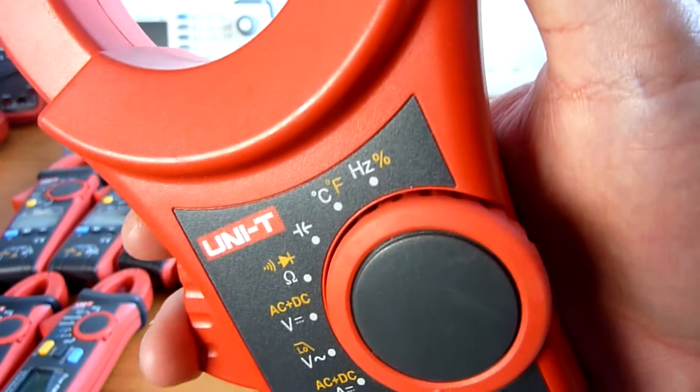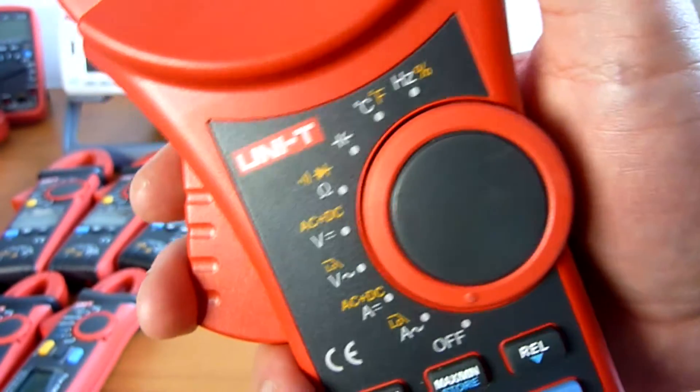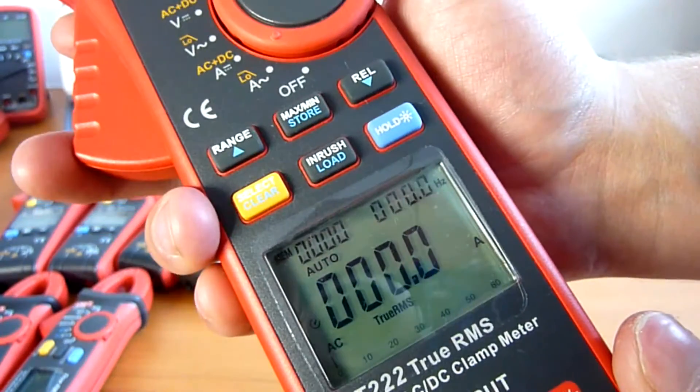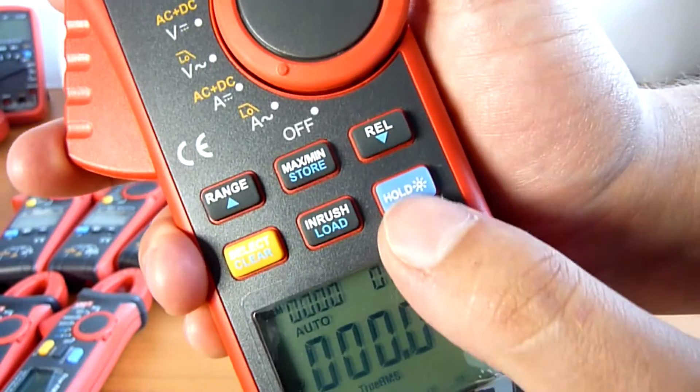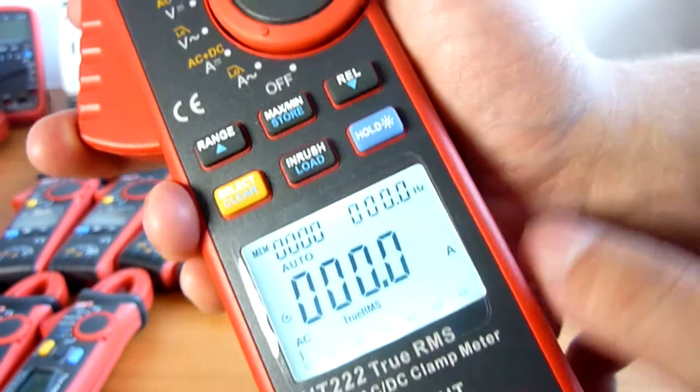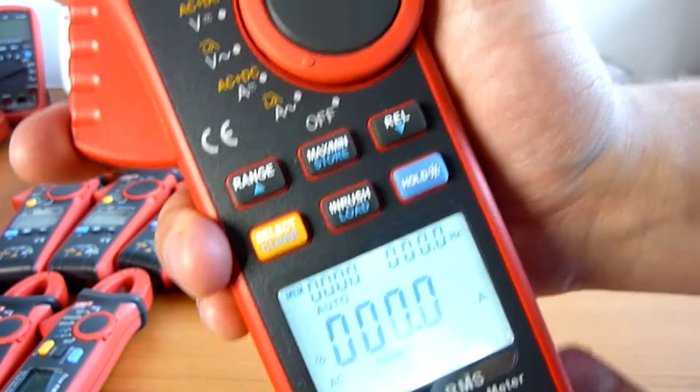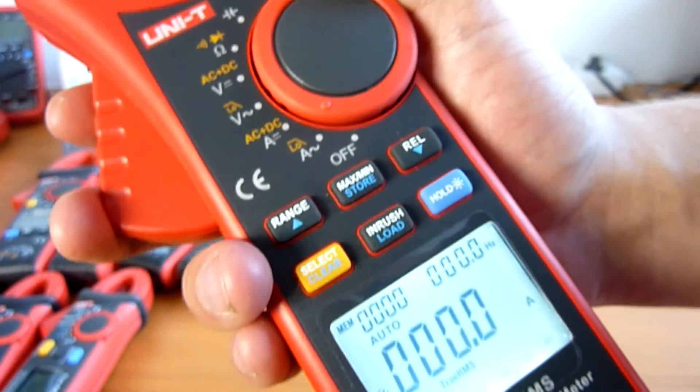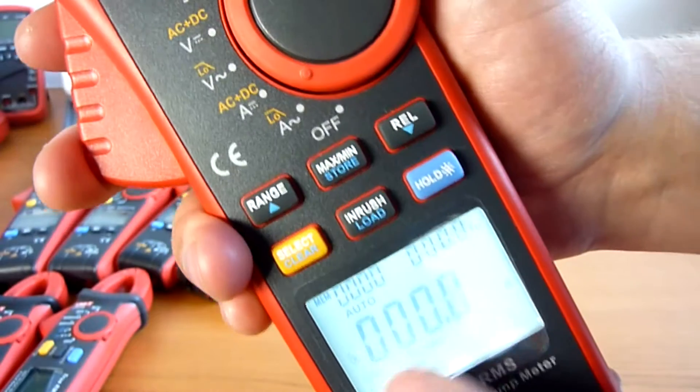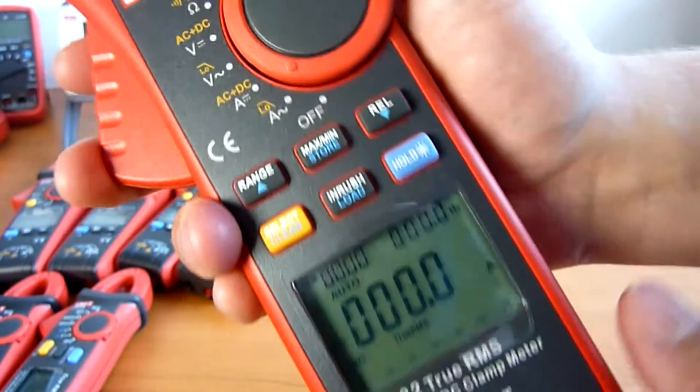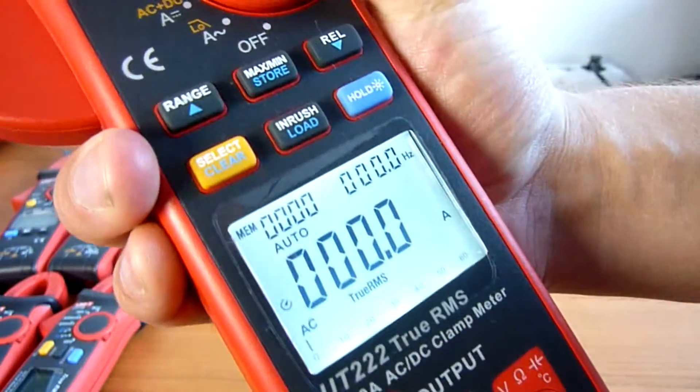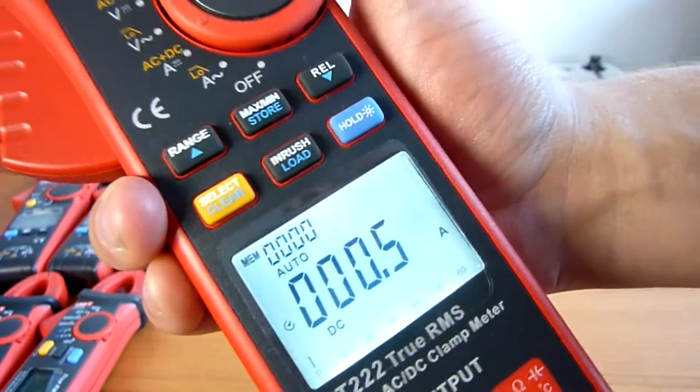Besides that, it's a classical clamp meter with some very nice features. The display can show you three values at the same time. You can measure both AC and DC at the same time, currents. You can also measure inrush currents and it's also possible to store the values into the inside memory.